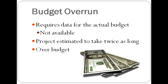Calculating the budget overrun requires data for the actual budget for each of the activities. Although we were initially given the planned expenditures for each activity, we were not given the actual budget for activities that have been completed. Therefore, it will not be possible to determine an exact figure for budget overrun. However, keeping in mind that the rate of performance was 200% and the project is therefore expected to take twice as long, it is quite likely that the project will be over the planned budget estimate. We just cannot estimate by exactly how much it will be over the budget.